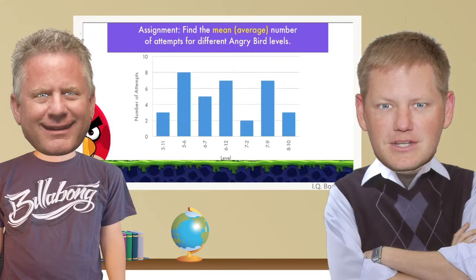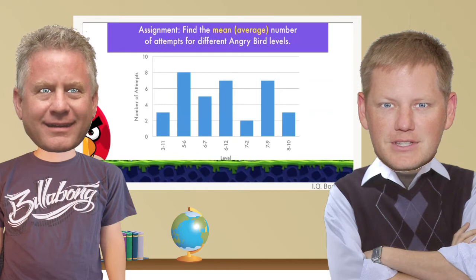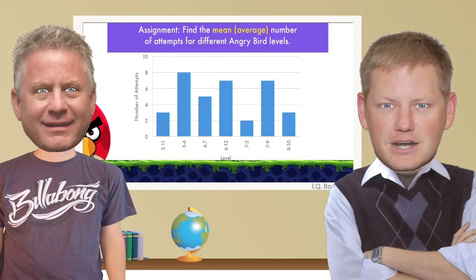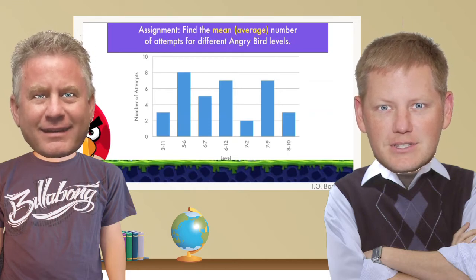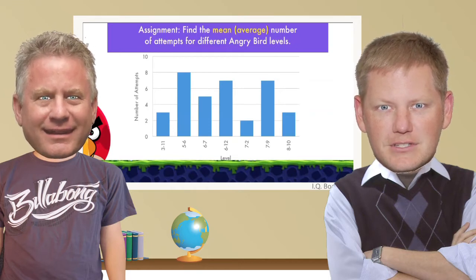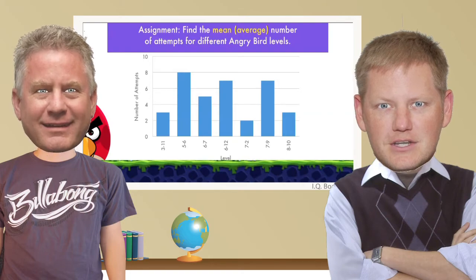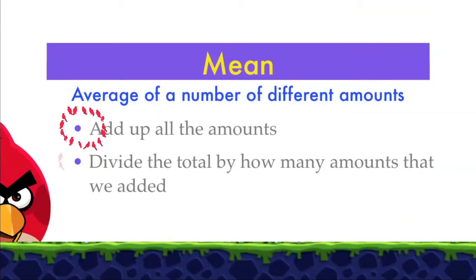It took you three times on that first one, Mr. Ruff. Yeah, that's right. So you're probably wondering, how do we find the mean? Two easy steps, Biff. The first one, we need to add up all the amounts. And the second step is divide the total by how many amounts that we added.